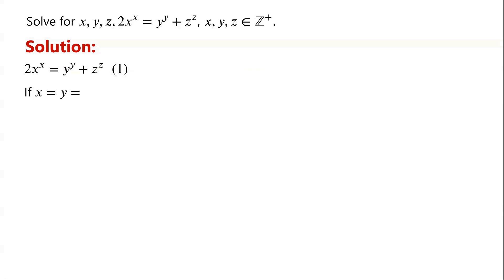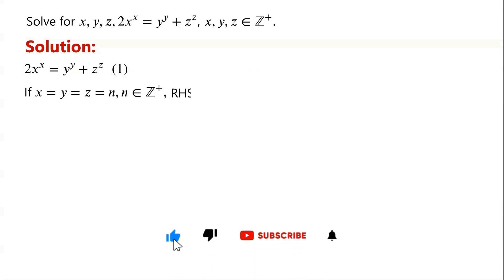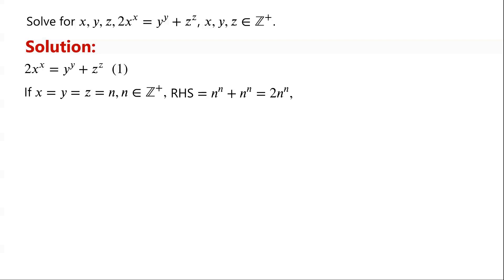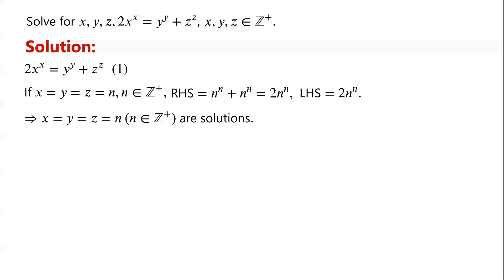In fact, if x equals y equals z equals n, where n is any positive integer, then the right-hand side of the equation equals n to the power of n, plus n to the power of n, which is equal to 2 times n to the power of n. And the left-hand side of the equation also equals 2 times n to the power of n. So for all positive integers n, x equals y equals z equals n are solutions of the given equation.